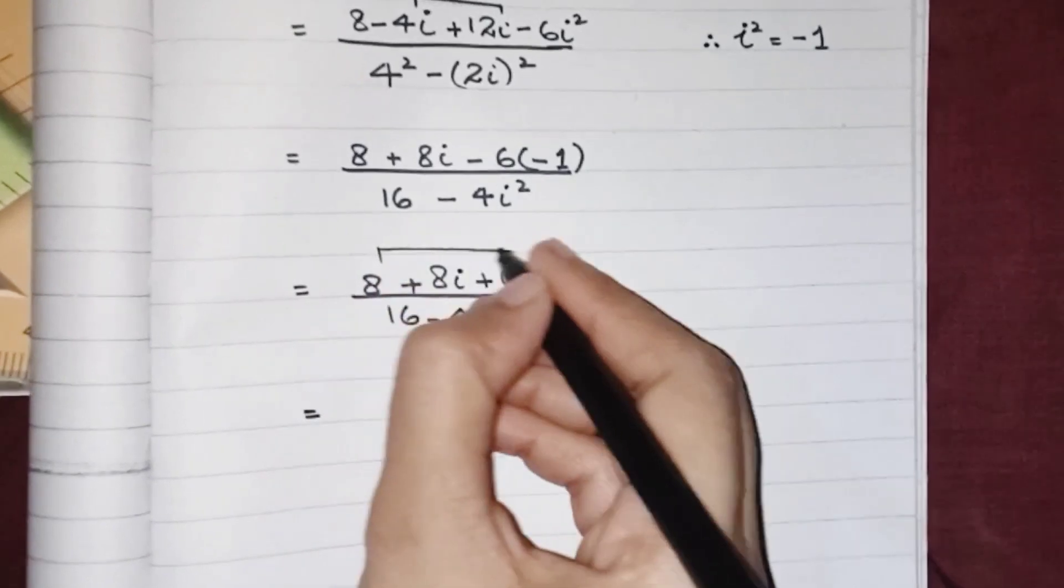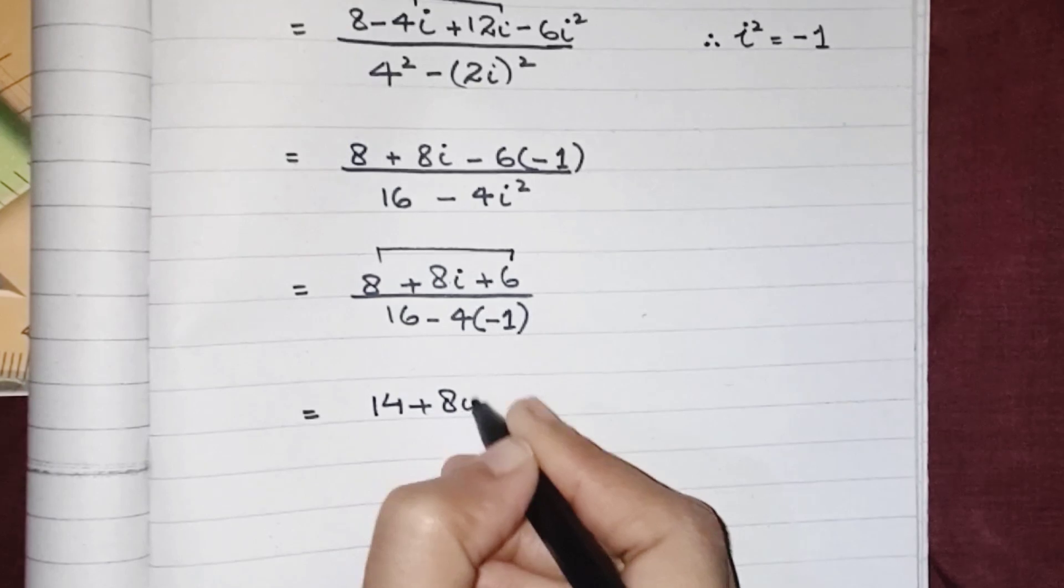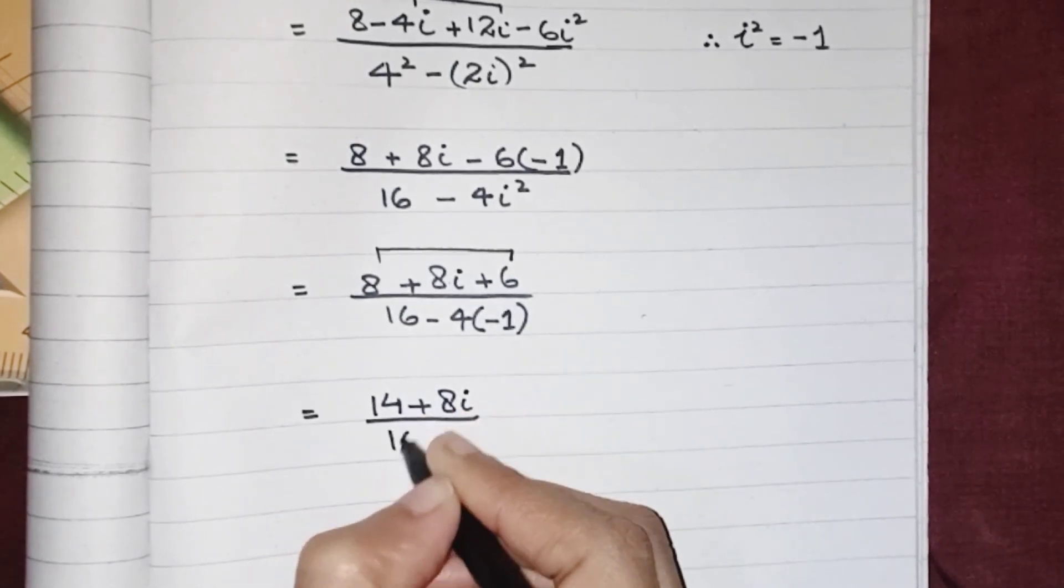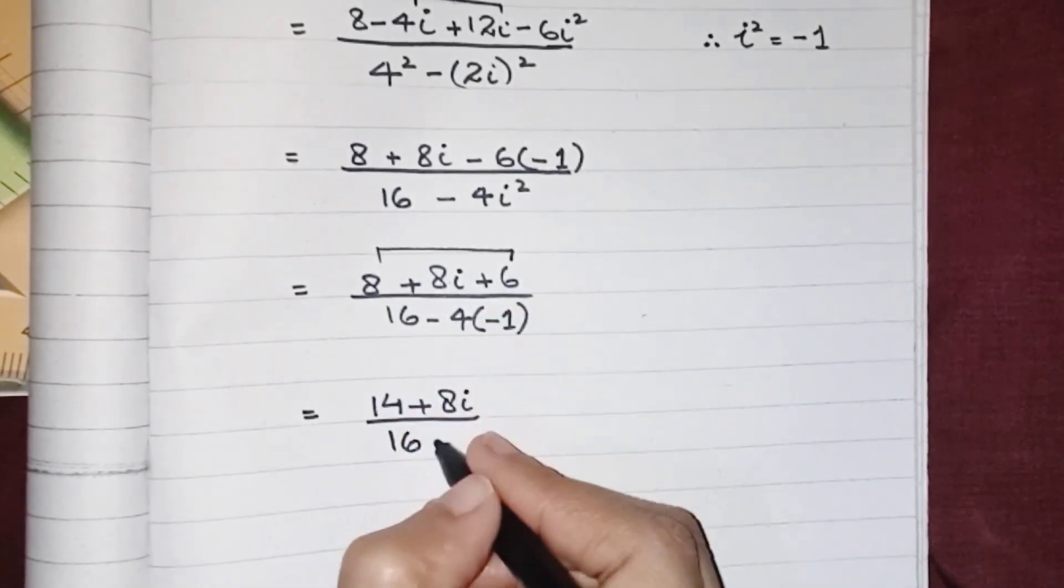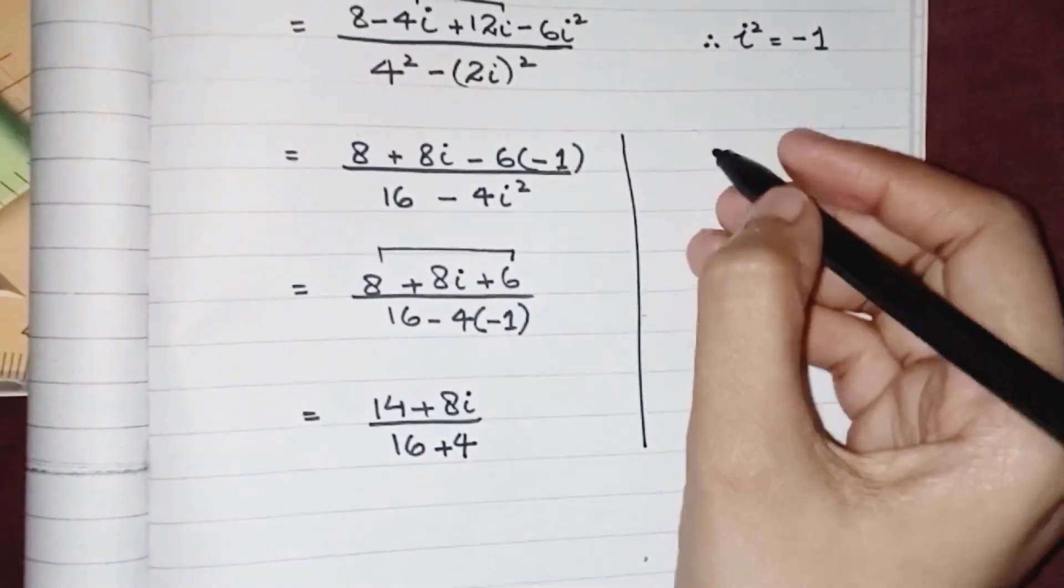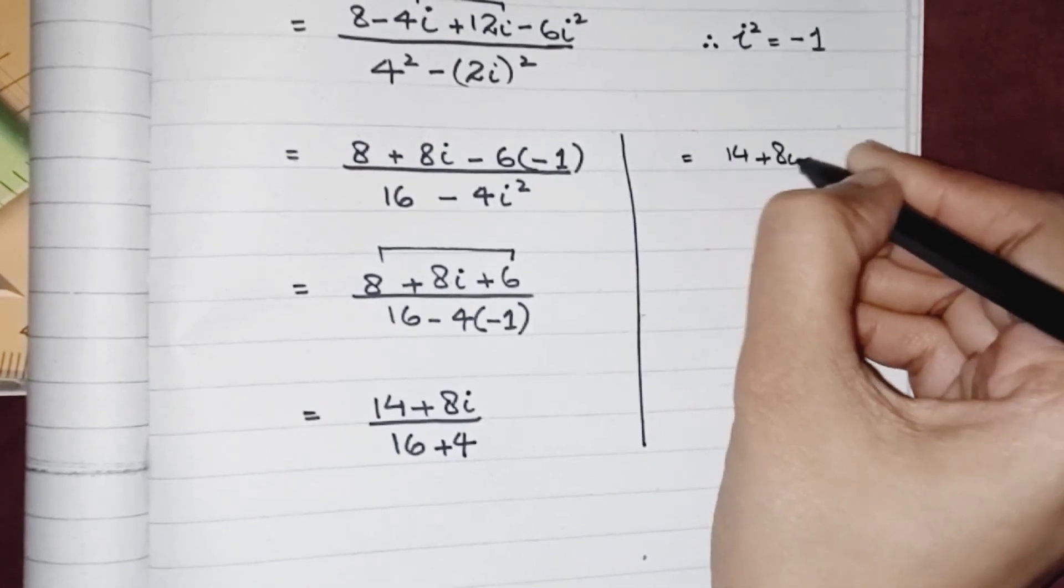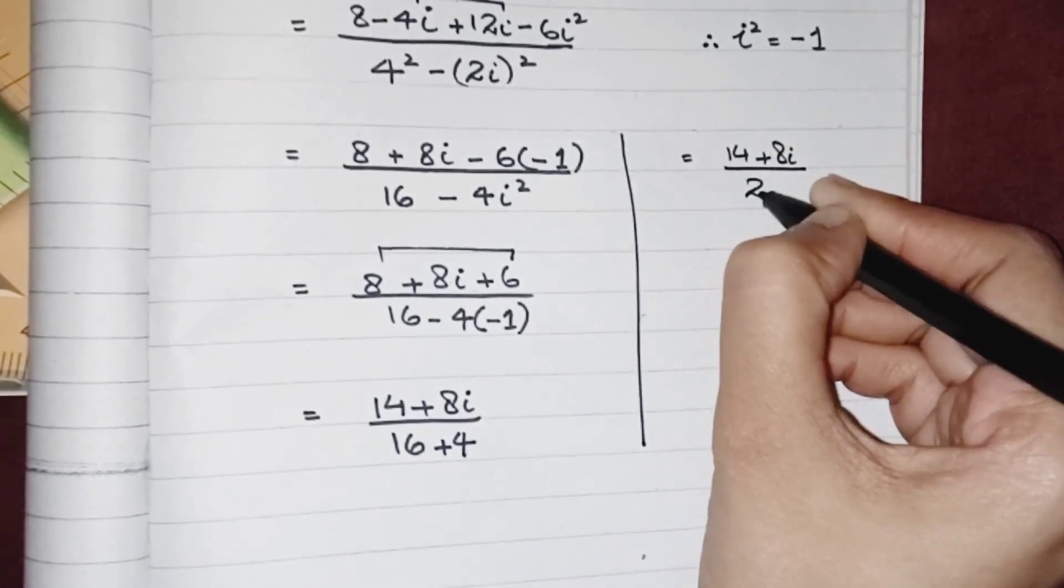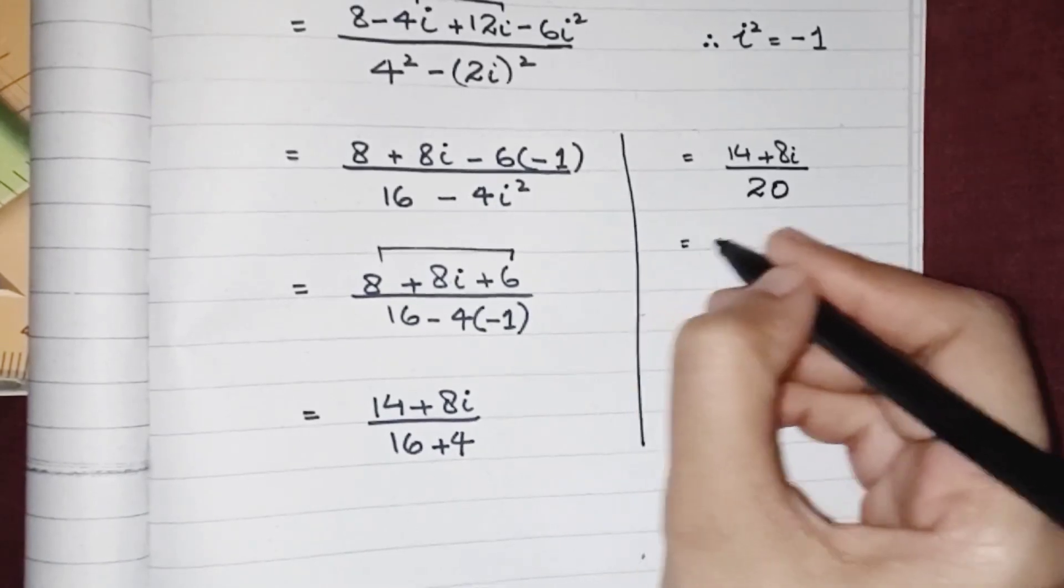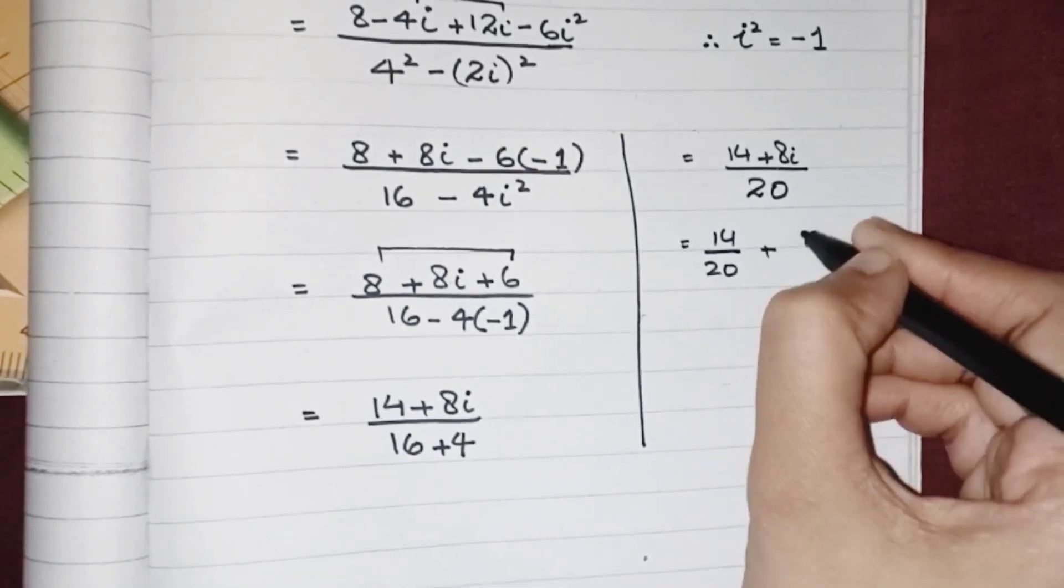8 and 6 both are like terms, so we can write 14 plus 8i upon 16 minus minus, which is plus 4. Now we have 14 plus 8i upon 20. Now we have to distribute both of them, the real part and the imaginary part, so we can write it like 14 upon 20 plus 8i upon 20.